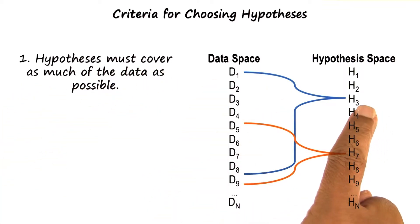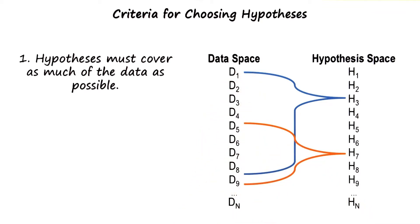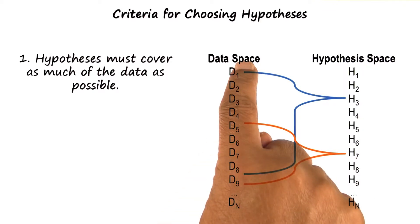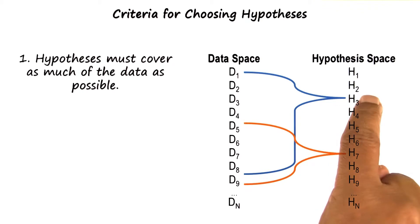Here is an example. Hypothesis H3 explains data items D1 through D8. Hypothesis H7 explains data items D5 to D9. Assuming that all of these data elements are equally important or equally salient, we may prefer H3 over H7, because it explains more of the data than does H7.